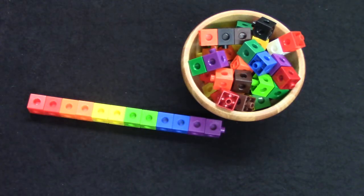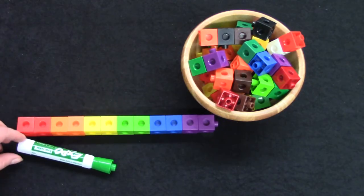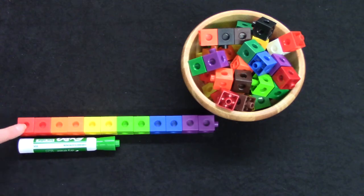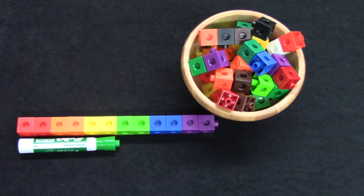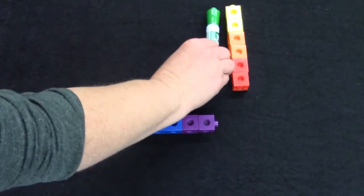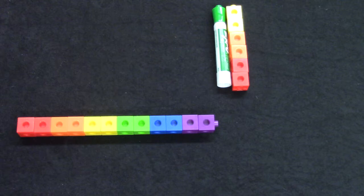What should we measure? I have a marker. Let's see how long the marker is. It is one, two, three, four, five, six cubes long. I put six cubes together. Let's put our marker right there. It is six cubes long.